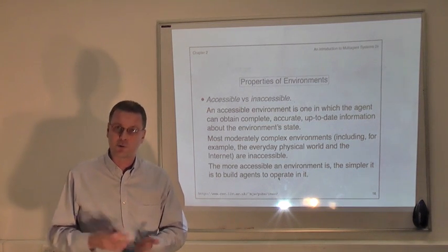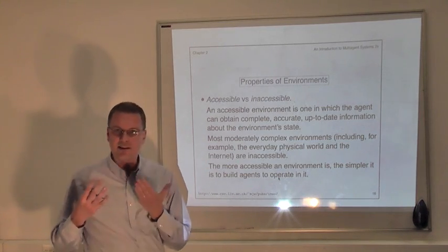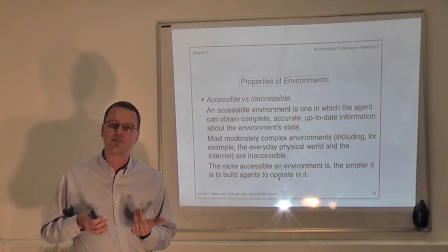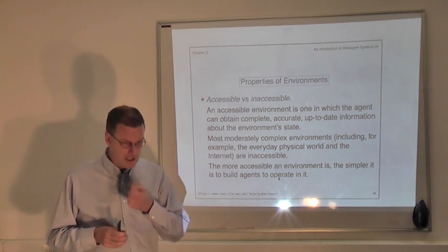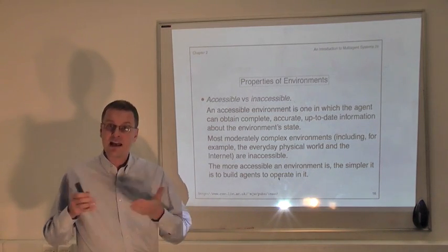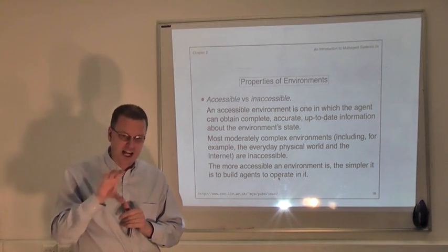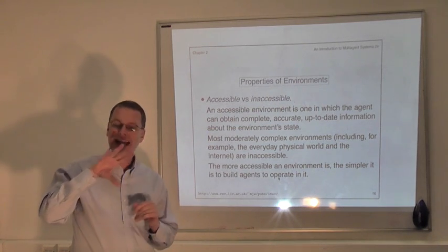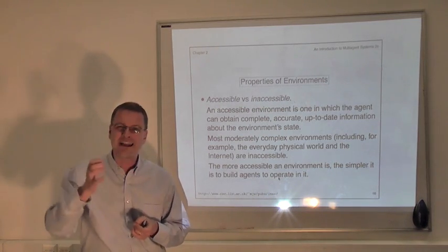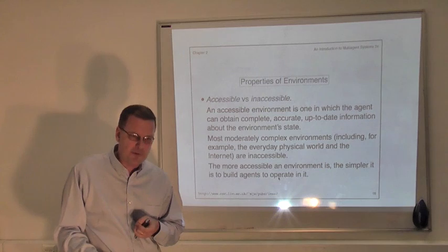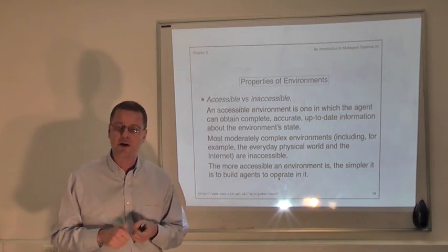We can think of unmanned autonomous vehicles as being autonomous agents in the physical world. But as well as having agents that operate in the physical world, we can think of agents that operate in virtual environments — software worlds like computer operating systems, like a Unix operating system or a Windows operating system, or network environments where an agent is inhabiting a computer network. We think of an agent as going through a continual sense, decide, act loop. An agent inhabiting a physical environment will have sensors like infrared range finders and sonar, and the actions it can perform include moving around the environment or using manipulators to manipulate objects.